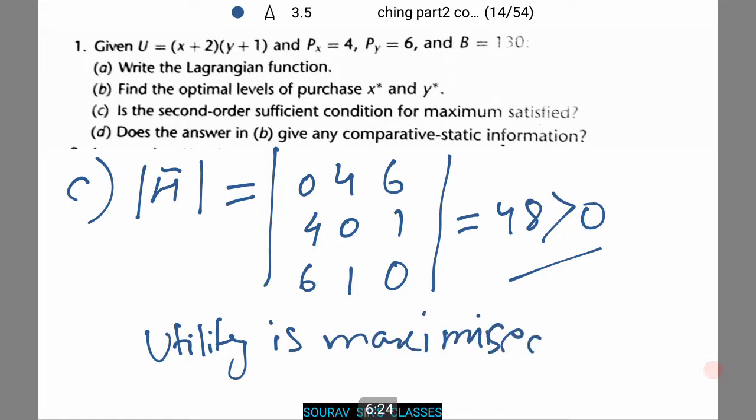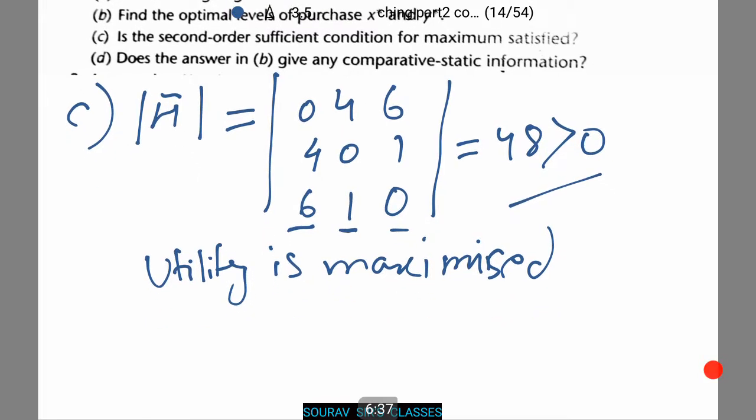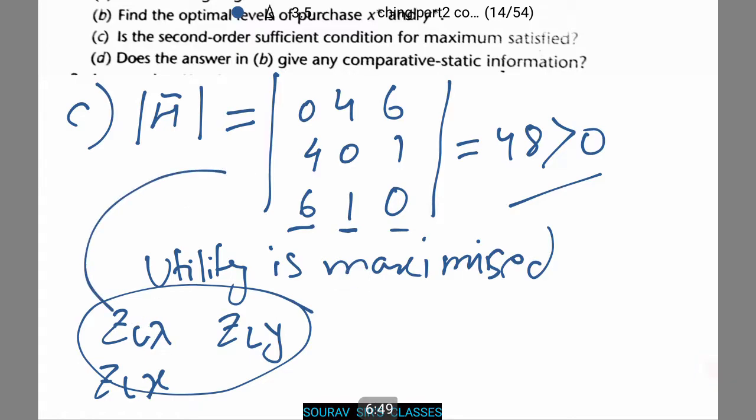Now if you're wondering where these values came from, the first column is the value of x, the second column is the value of y in our previous question, and the third of lambda. Remember we found out zl lambda, zl x, and zl y. These are the three equations from which we derive this Hn determinant.